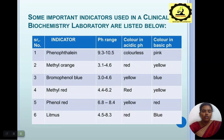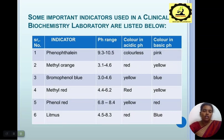There are six different pH indicators with corresponding pH ranges, acidic colors, and basic colors. Phenolphthalein: pH 9.3 to 10.5, colorless in acidic, pink in basic. Methyl orange: pH 3.1 to 4.6, red in acidic, yellow in basic. Bromophenol blue: pH 3.0 to 4.6, yellow in acidic, blue in basic. Methyl red: pH 4.4 to 6.2, red in acidic, yellow in basic. Phenol red: pH 6.8 to 8.4, yellow in acidic, red in basic. Litmus: pH 4.5 to 8.3, red in acidic, blue in basic.